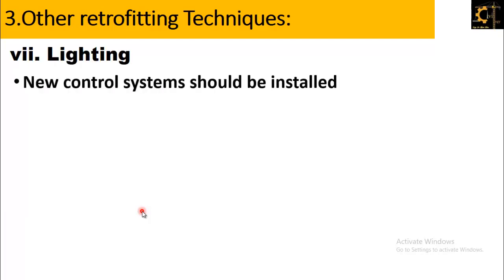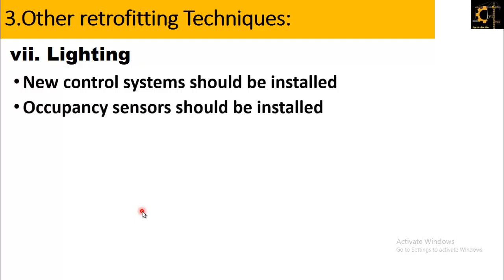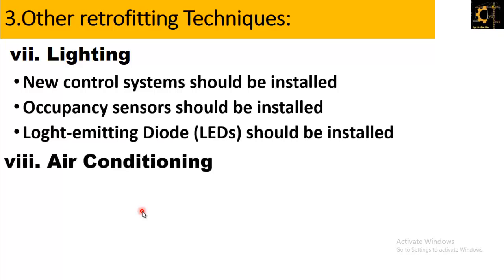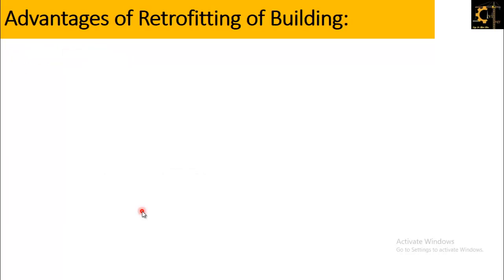Where lighting is involved, new control systems should be installed, occupancy sensors should be installed, and LED lights should be used. For air conditioning, passive cooling systems should be installed.